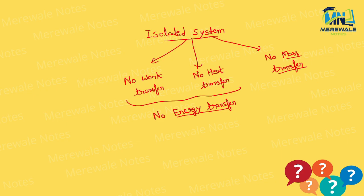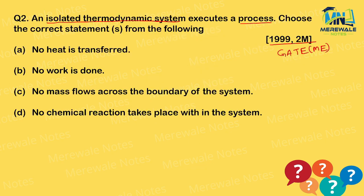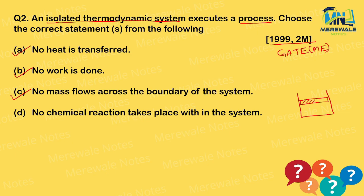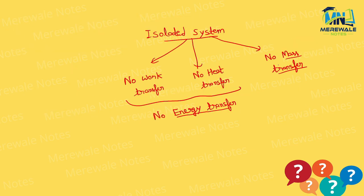An isolated system has no mass flow either. Now, option D says 'no chemical reaction takes place within the system.' But chemical reactions can occur inside an isolated system. Remember: isolated means no work transfer, no heat transfer, no mass transfer — but internal chemical reactions are possible.